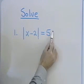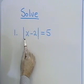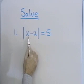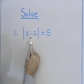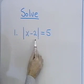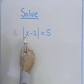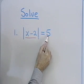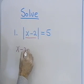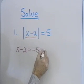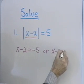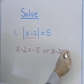We solve this equation by thinking about what's inside the absolute value as being either positive 5 or negative 5. That's the only way we can get the absolute value of a quantity to be equal to 5. So that means x minus 2 must be equal to negative 5, or x minus 2 is equal to positive 5.